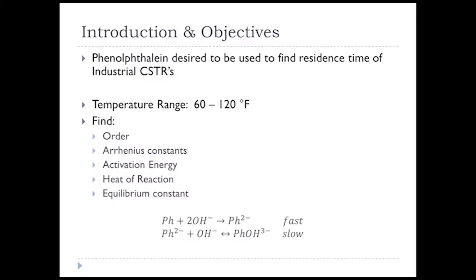Let me give you a little bit of background on this experiment. Phenolphthalein is used to find the residence time of an industrial CSTR, but in order to do that, we have to find the order of the reactions, the rate constants, activation energy, heat of reaction, and equilibrium constants. When you add phenolphthalein to a hydroxide solution, you have two reactions. First, phenolphthalein plus hydroxide goes to Ph2⁻ — that's a very fast and irreversible reaction. The second reaction is Ph2⁻ plus hydroxide going to Ph3⁻, which is very slow and also reversible.